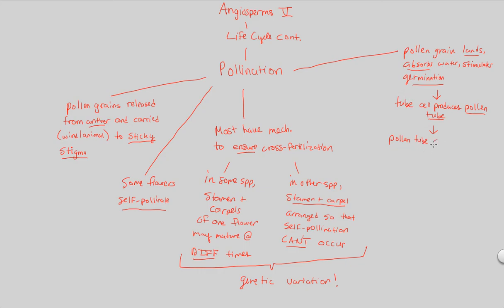The pollen tube, coming from the tube cell which is part of the pollen grain, grows down the style. The style is that structure that goes from stigma to ovary — sort of like a highway. That pollen tube grows down this roadmap toward the ovary. We want to go toward the ovary because the ovary contains the ovule, which contains the megasporangium, which contains the female gametophyte and the egg. That's where we need to get to.